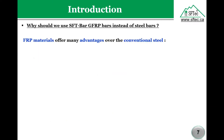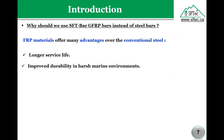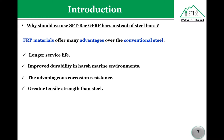Some advantages of SFT bars or GFRP bars over steel: they have a longer service life because of corrosion resistance, and improved durability in harsh marine conditions — perfect for ports, construction, or any building in contact with water or a marine environment. If you compare to steel, steel corrodes while FRP does not corrode no matter what. GFRP also has greater tensile strength — at least three times stronger than steel.